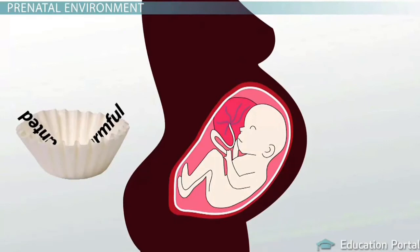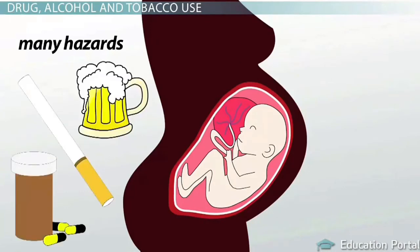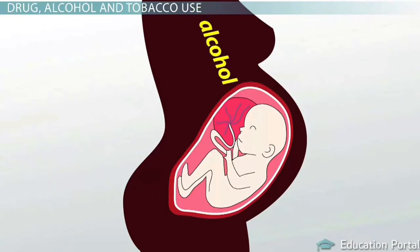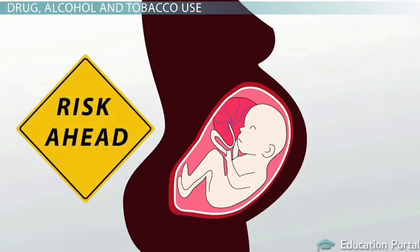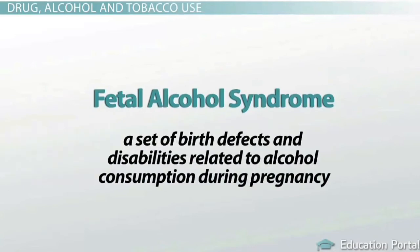While the prenatal environment protects the embryo and fetus from a great many dangers, it cannot protect the unborn child from everything the mother comes into contact with. There are many potential hazards in prenatal development, many related to drug, alcohol, or tobacco use. Alcohol, for example, can quickly cross the placenta and enter the unborn child's bloodstream at the same levels found in the mother's blood. Women who drink alcohol during pregnancy put their child at risk for fetal alcohol syndrome, a set of birth defects and disabilities related to alcohol consumption during pregnancy.